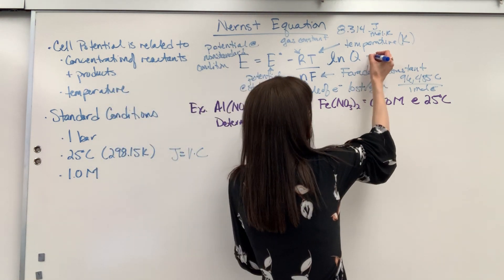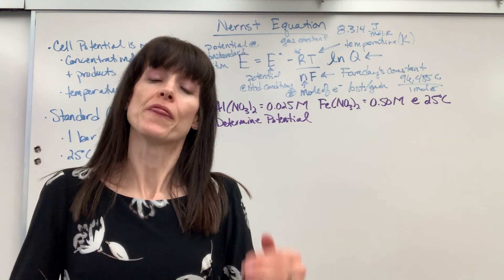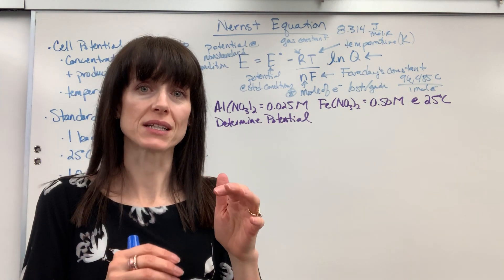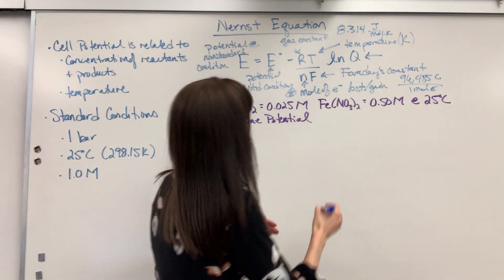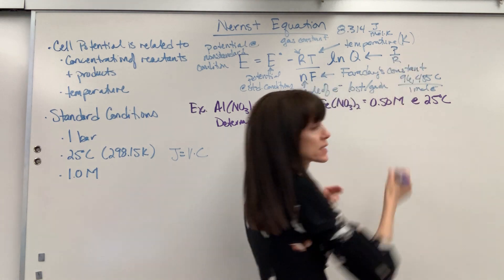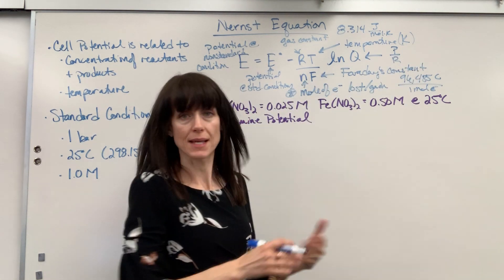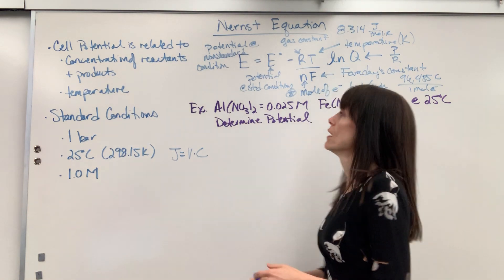Now Q, you will remember Q from doing equilibrium. This is going to be the ratio of products over reactants at some point, at some given time. So Q is going to be product over reactant ratio at some time, at some non-standard condition.